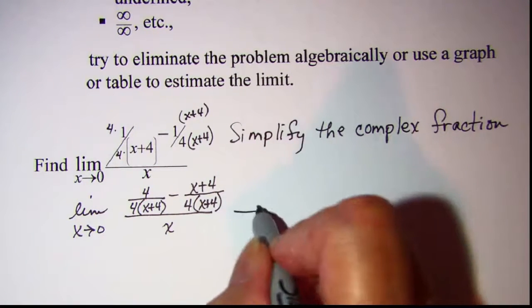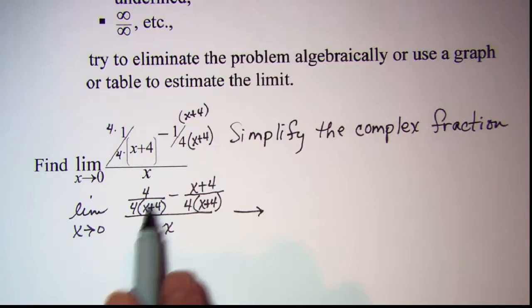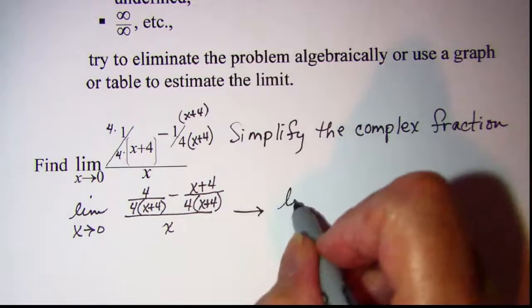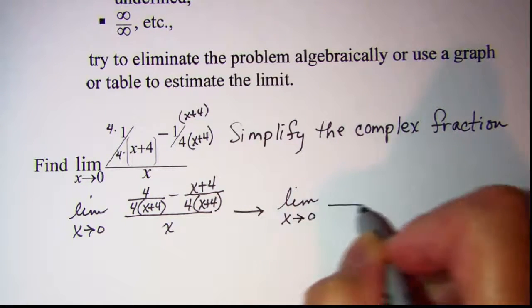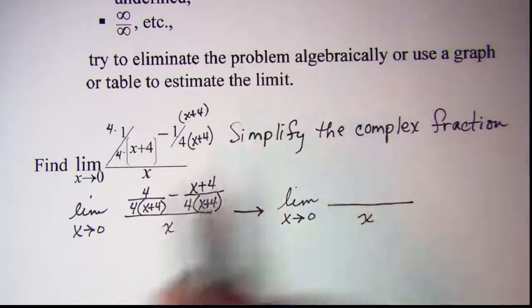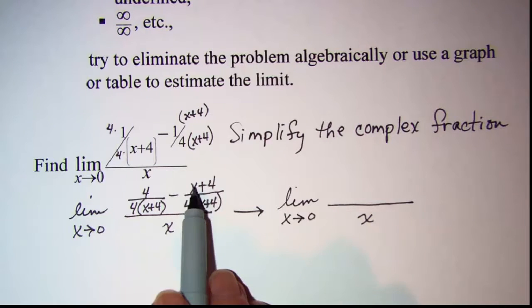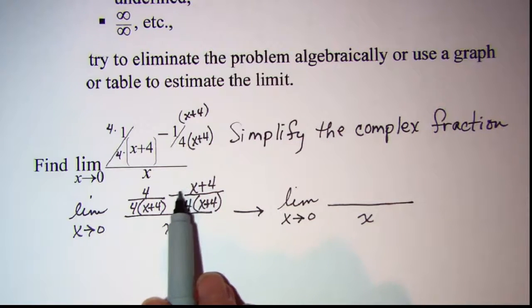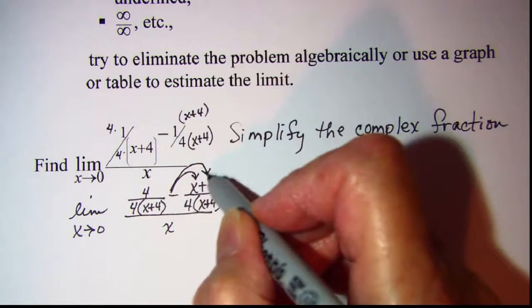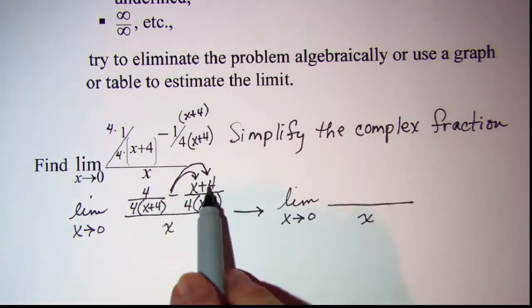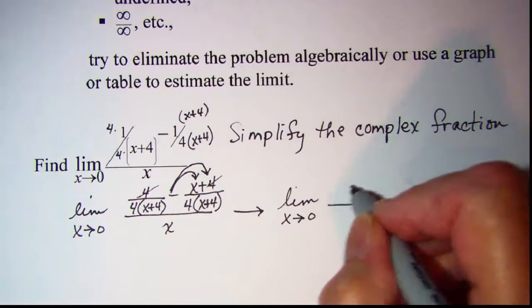Now I have a common denominator between these two fractions, and I can go ahead and subtract them. And I have 4 subtract x, and I'll need to distribute my minus to both of these terms. So 4 subtract 4, those are going to cancel, and I just have an x.